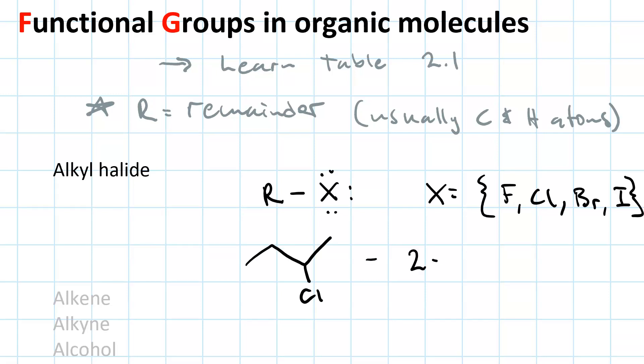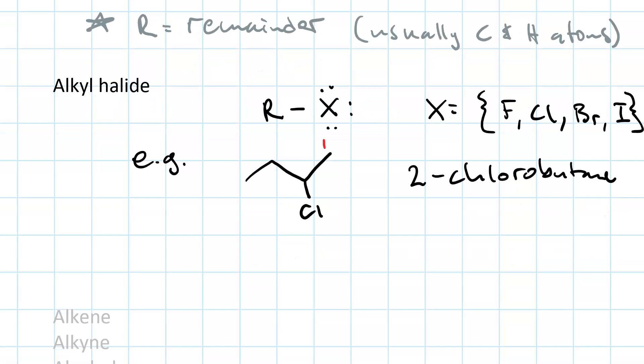This one is 2-chlorobutane. We always number it so that the number of the carbon where the functional group is attached is the lowest possible. Hence, here we number left to right. And the condensed structure for this would be CH3, that's carbon 1. Carbon 2 is CH. Put the side chain, the chlorine, in parentheses. Then CH2, that's carbon 3. CH3 is carbon 4.